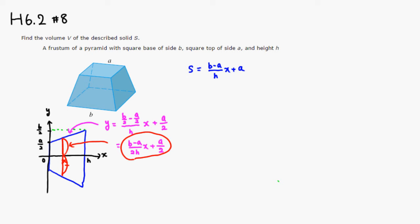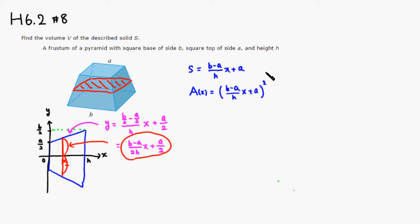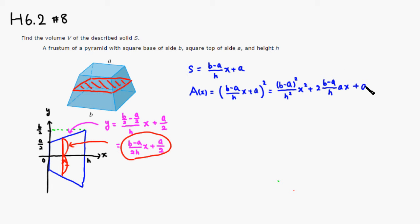Each cross-section is a square, so the area of that square is S(x) squared: A(x) = [(B - A)/H · x + A]². Multiplying that out, you get (B - A)²/H² · x² + 2(B - A)/H · A · x + A².